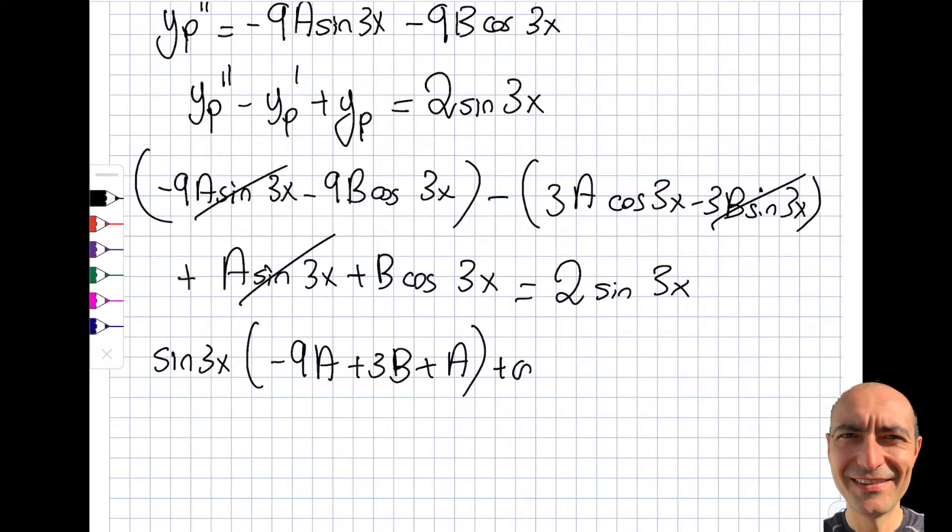Let's do the same thing with cosine of 3x, so you will see I will get myself this time minus 9b, so that's gone. Minus 3a, that's gone, plus a nice b will be equal to 2 sine 3x plus 0 cosine 3x.